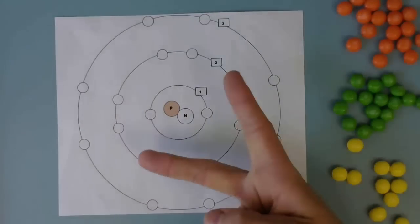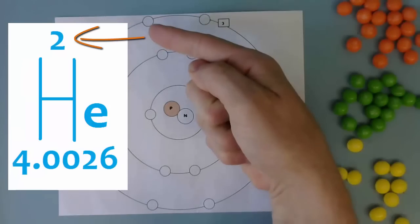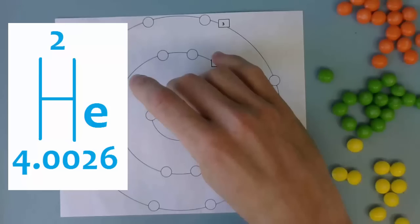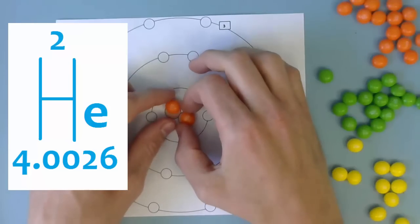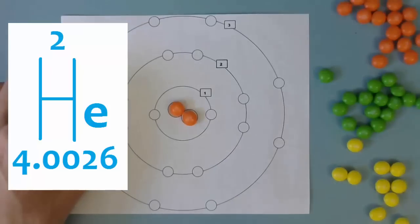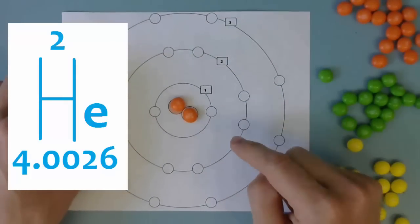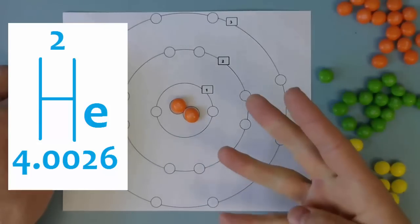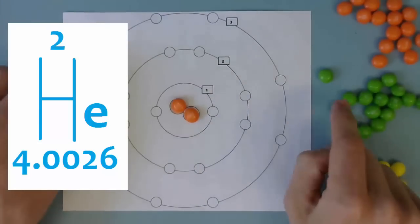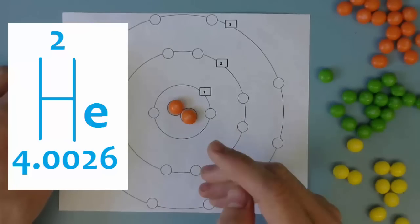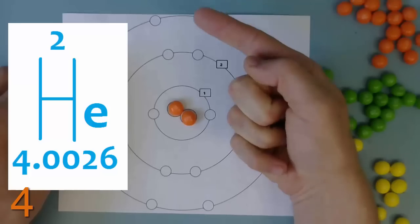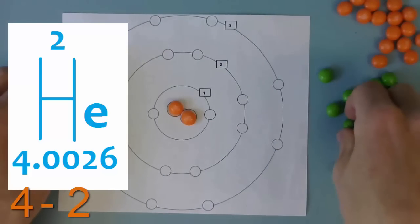Helium has the atomic number of 2, so it's going to have 2 protons in its nucleus. Helium has an atomic mass of 4.026, so we're going to round that down to 4. To determine the number of neutrons, we take the atomic mass of 4, subtract the atomic number of 2, and you get 2.